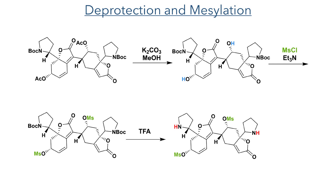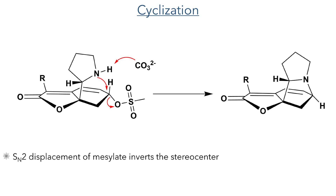In order to prepare for the final cyclisations, the acetate groups were deprotected and the resulting hydroxyl groups were mesylated to convert them into suitable leaving groups. Deprotection of the N-Boc groups with TFA unmasked the nitrogen nucleophiles. Reaction of the molecule with potassium carbonate performed the desired transformation, forming a new five-membered ring with a tertiary amine via an SN2 mechanism which inverted the stereocenter and provided the target stereochemistry.